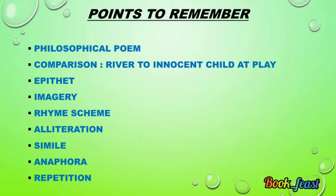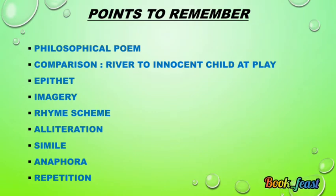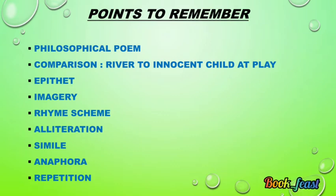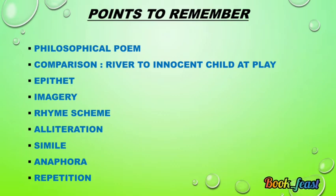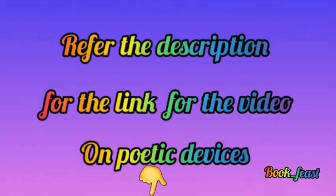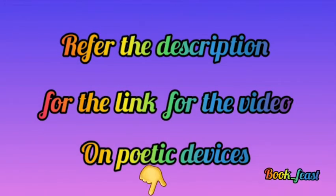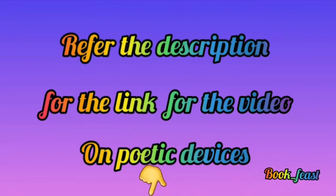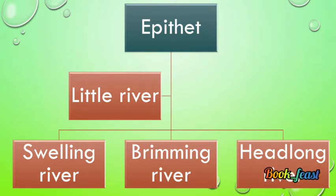Third, the poetic devices seen in this poem include epithet, imagery, rhyme scheme, alliteration, simile, anaphora, and repetition. To get a clear understanding of these poetic devices, we have posted a video on poetic devices in our channel, and the link is shared in the description. Please do refer to that and watch it — it will be really beneficial for you.